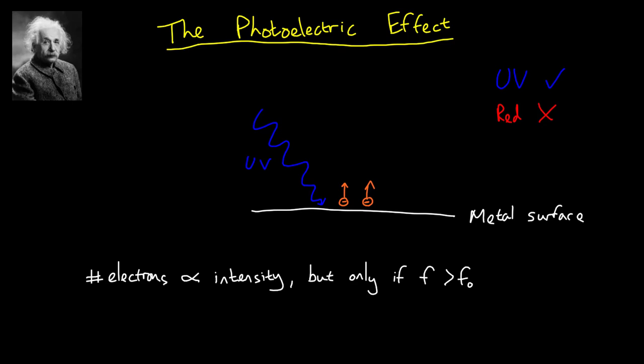The wave theory of light says that each surface conduction electron should absorb energy from the waves regardless of their frequency so it cannot explain this cliff edge below which no electrons are emitted at all.